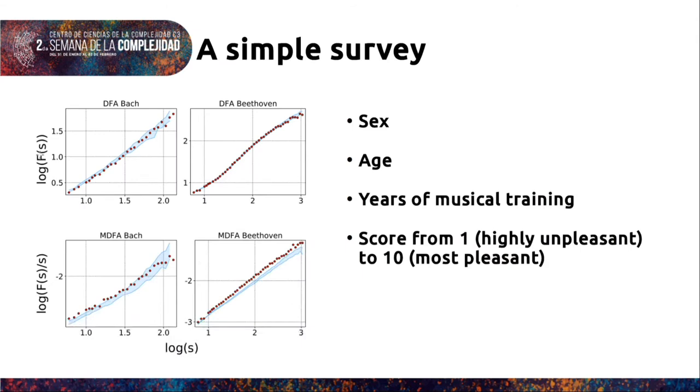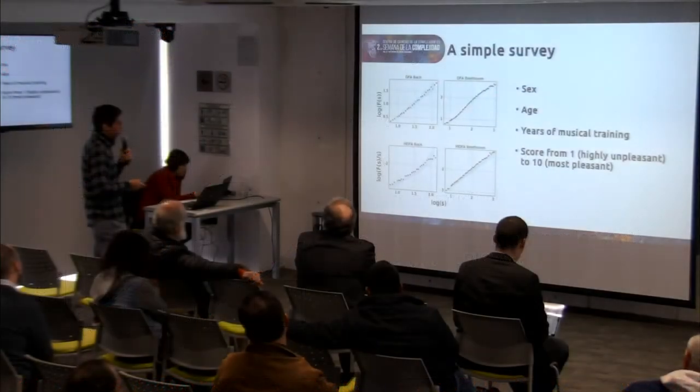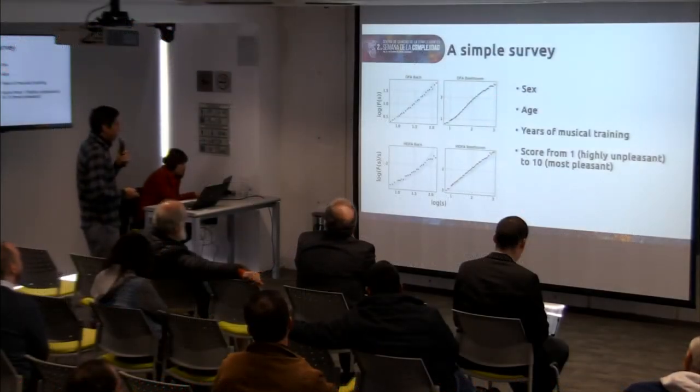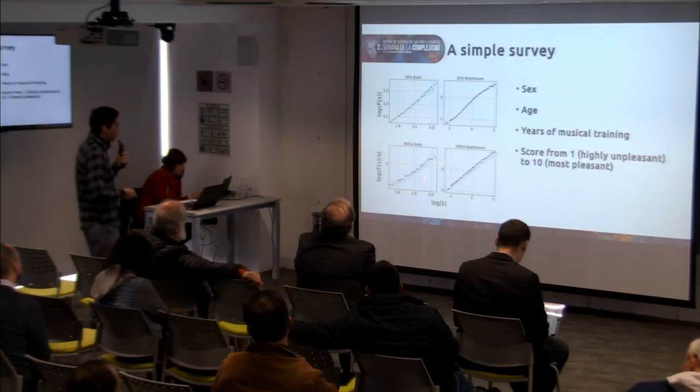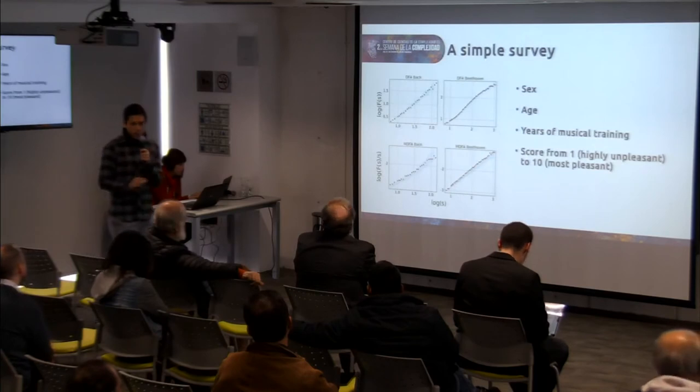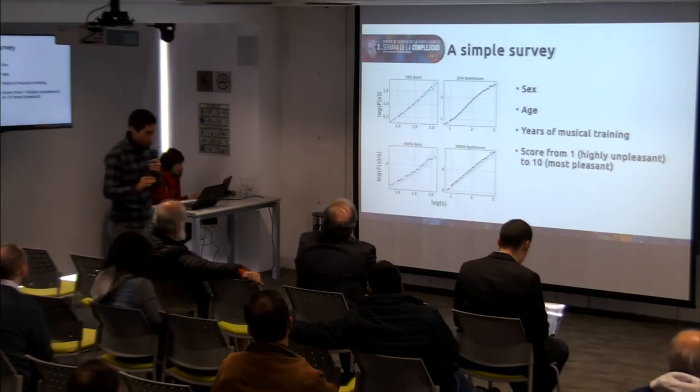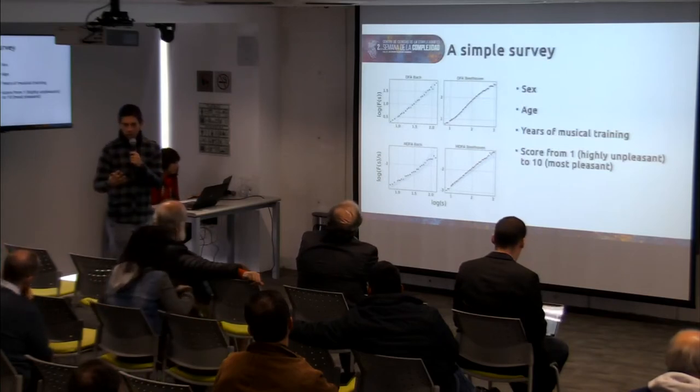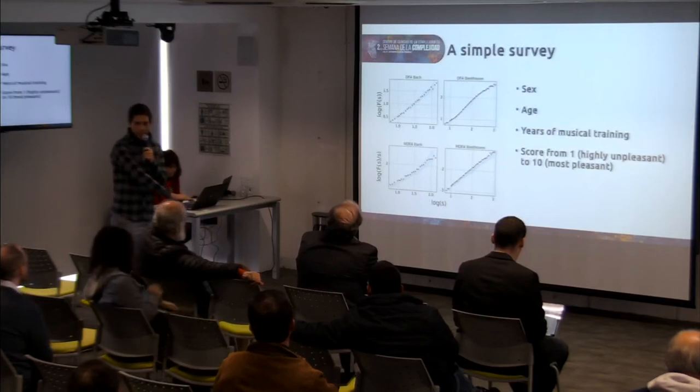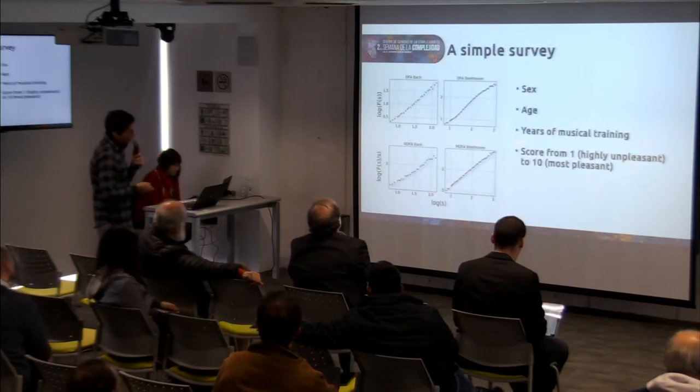They made a survey, and what we decided to interpret this, to give an interpretation to the results, we decided to make a survey also. What we did is to generate surrogates of two pieces, one from Bach and one from Chopin. And we chose the pieces in the way that one should lack of nonlinear correlations, okay? If the piece lacks from nonlinear correlations, it means that all the correlations, or almost all correlations, exist in the linear correlations, okay? And other one from Beethoven that has in all scales nonlinear correlations.